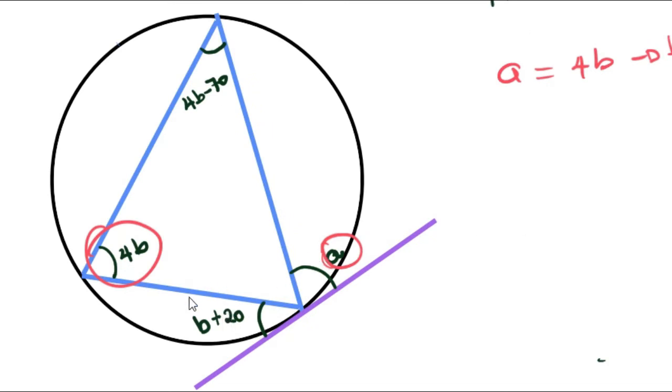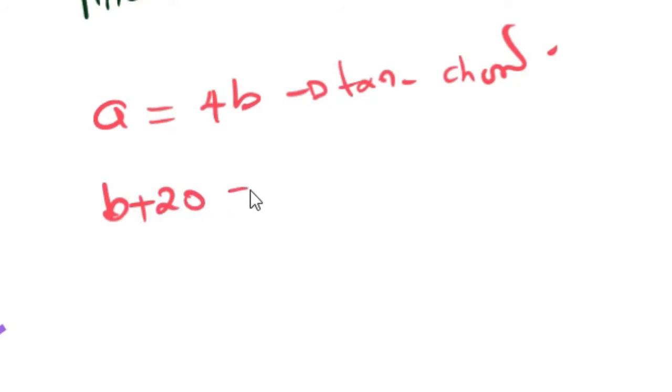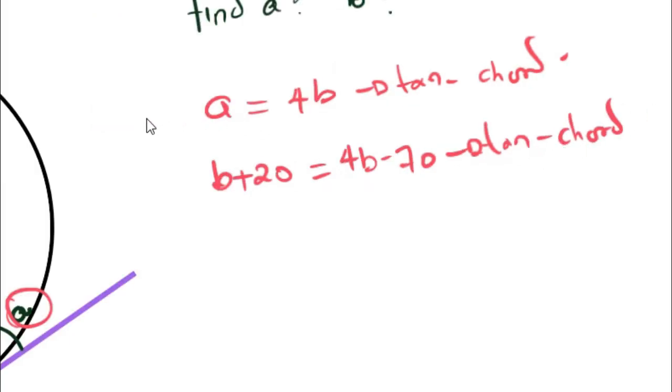We also understand that if we look at the other side, and this now becomes our chord, and this is our tangent, we understand that this should be equal to that over there. B plus 20 should be equal to 4B minus 70. Also, Tangent-Chord. Now, for the first statement we have here, we can't really do much. We have two unknowns there, so it's not going to be possible for us to get the answer. However, the second statement, we can simplify it and get an answer.